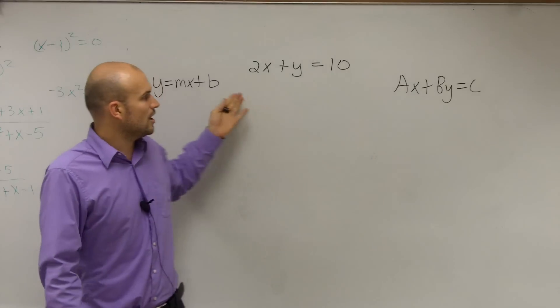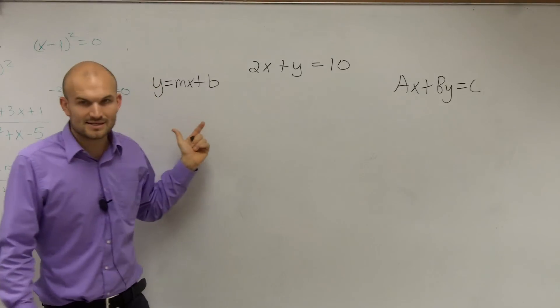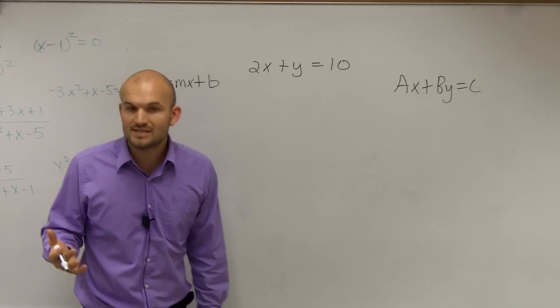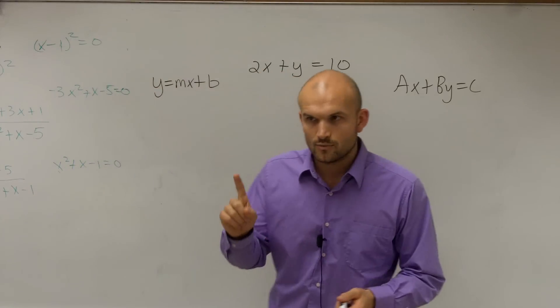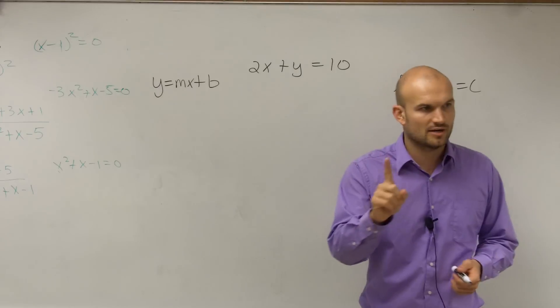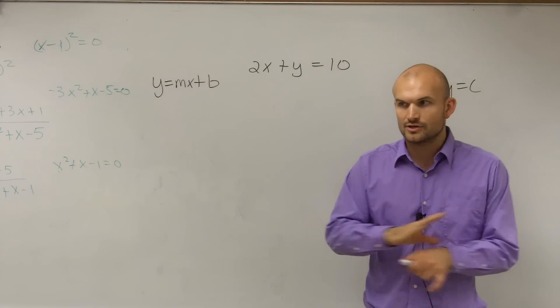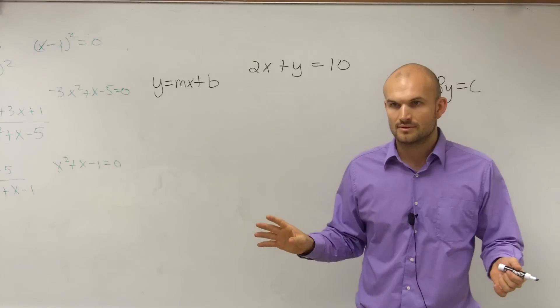However, rather than always trying to write them in these two formats, there's another way that we can always think of when do we always have linear relations. We always have linear relations when the exponent of our variables is always 1. If you have an exponent other than 1, you're not dealing with the linear relation.